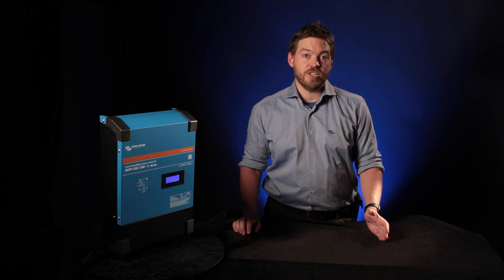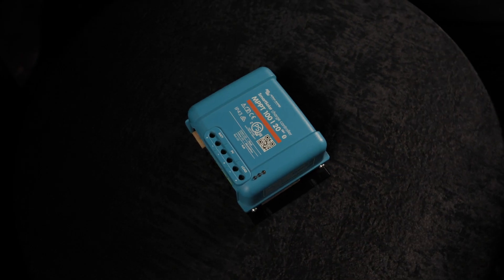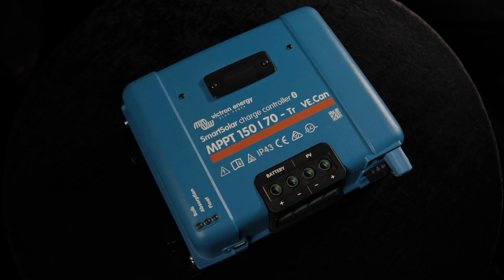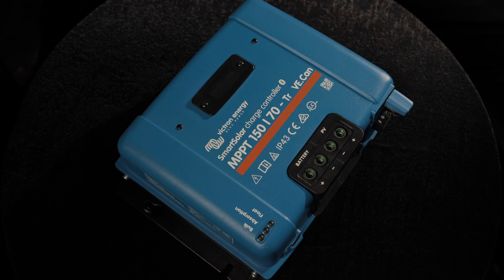We'll run through some of the limitations of the new unit and some important things to know when designing one into a system. The Victron MPPT RS is a big step forward for Victron in new charge controller design. We've got an extensive range of MPPTs already starting at 75 volts and 10 amps all the way up to 250 volts and 100 amps and everything in between. The MPPT RS changes that format considerably.